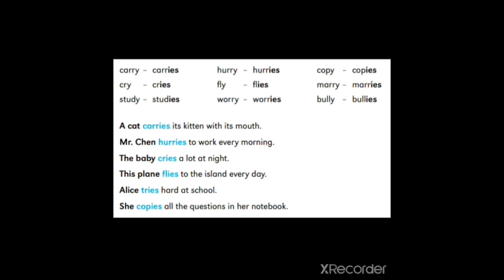A cat carries its kitten with its mouth. A cat is the subject. Carries is the es form of the verb carry. Mr. Chen hurries to work every morning. Mr. Chen is the subject. Hurries is the es form of the verb hurry. The baby cries a lot at night. The baby is the subject. Cries is the es form of the verb cry. This plane flies to the island every day. This plane is the subject. Flies is the es form of the verb fly. Alice tries hard at school. Alice is the subject. Tries is the es form of verb try. She copies all the questions in her notebook. She is the subject. Copies is the es form of the verb copy.